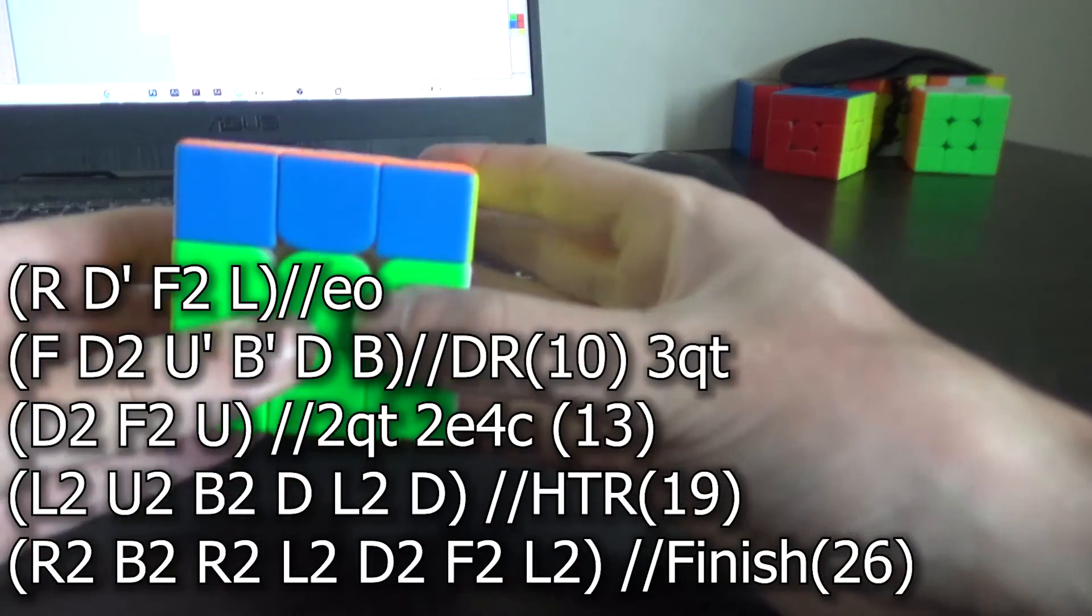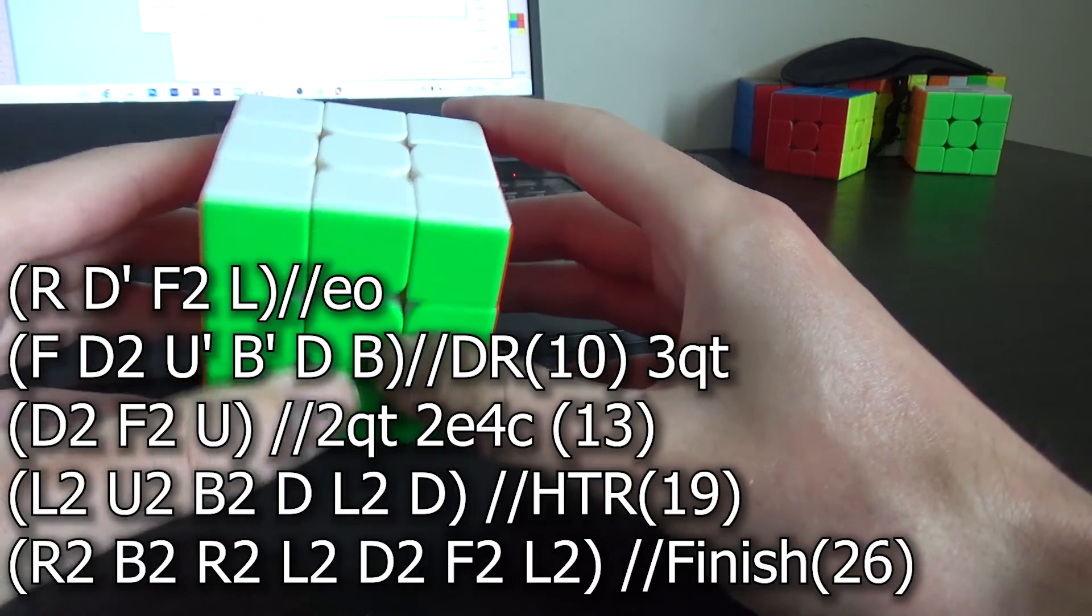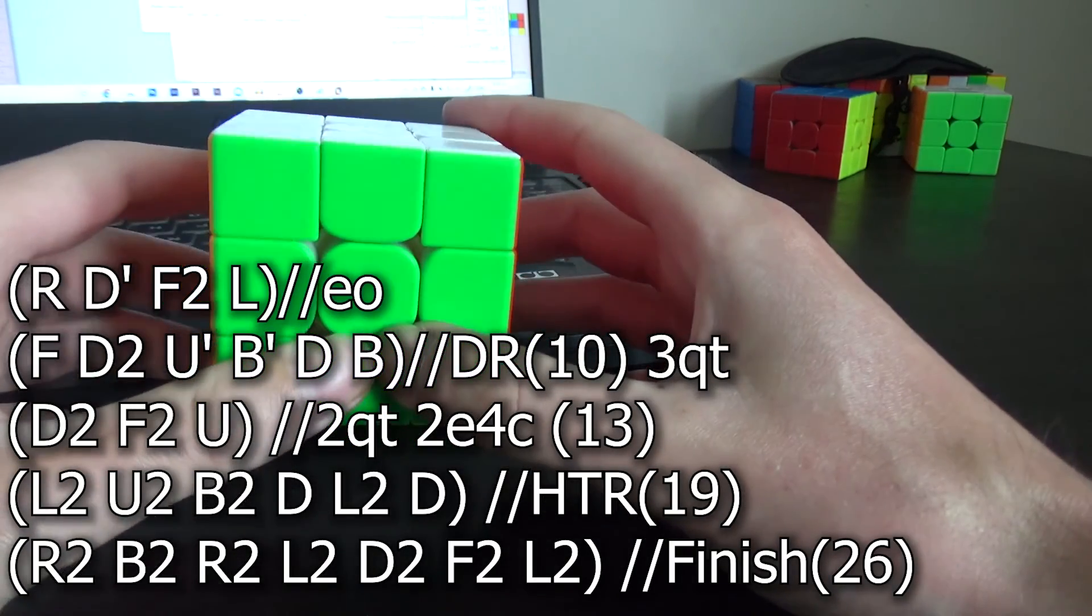After that there's this pair that we can set up to the 2x2x3, but before doing that if you do an L2, mix more blocks, then doing the D2 F2 leaves you with one move left. So that's a 7 move direct finish and that was the best I could find on this solve so I got a 26.